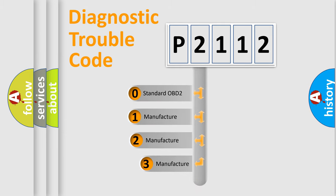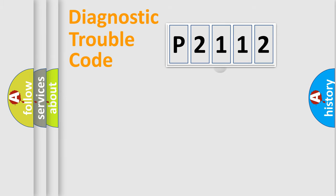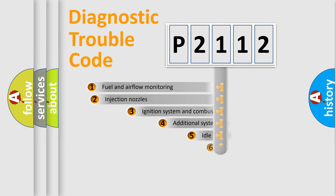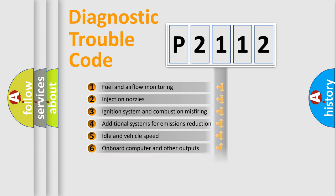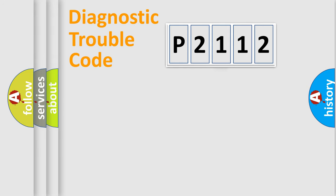If the second character is expressed as zero, it is a standardized error. In the case of numbers 1, 2, or 3, it is a more precise expression of a car-specific error. The third character specifies a subset of errors.